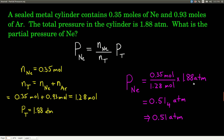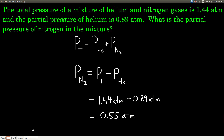Notice the units of moles cancel, leaving us with atmospheres. If the total pressure were in millimeters of mercury or torr, that's the unit we'd get for the partial pressure. In this case, we get 0.51 atmospheres for the partial pressure of neon. We could do the same for argon. Another thing we can do with Dalton's Law is if we know the total pressure and the partial pressure of one gas, we can find the partial pressure of the other.